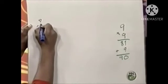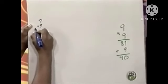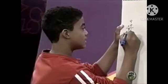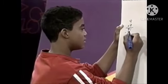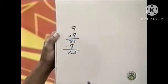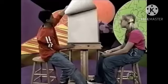Nine times nine is eighty-one. What about eighty-one minus nine? No, that'd be seventy-two. Seventy-two... hmm. What can we do with seventy-two and one more nine?